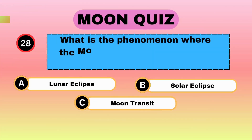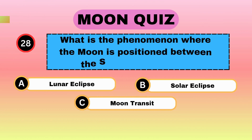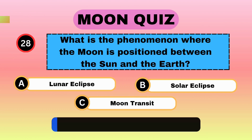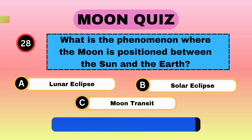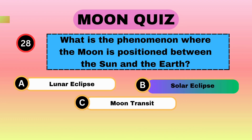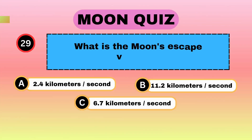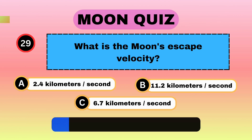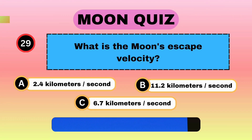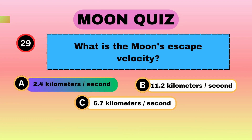What is the phenomenon where the Moon is positioned between the Sun and the Earth? Solar eclipse. What is the Moon's escape velocity? 2.4 kilometers per second.